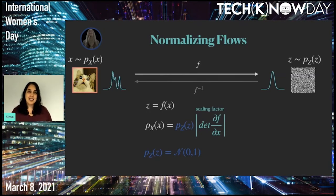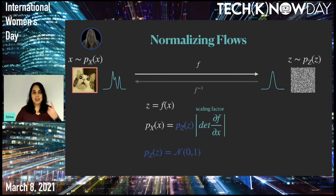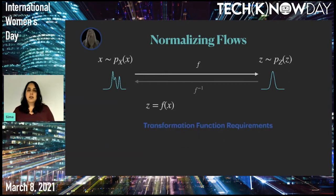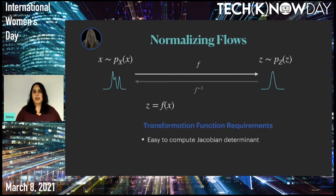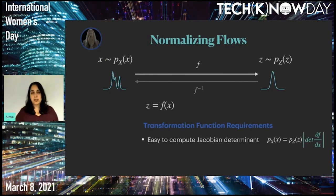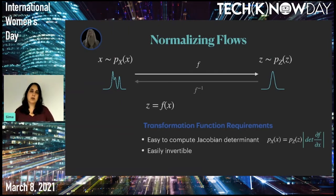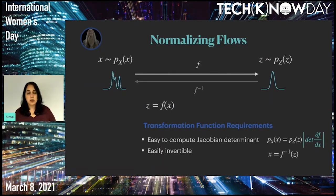What are the conditions for this transfer function to be useful in a generative model? First, the Jacobian determinant has to be easy to compute, because we optimize this during training and slow computation means slow training. Second, it has to be easily invertible, because we want to use it as a generative model — generating X from Z requires the inverse function. The probability of X corresponds to the distribution of our training images, which is very complex, making it unlikely that a single function can map it to a normal distribution while holding these conditions.